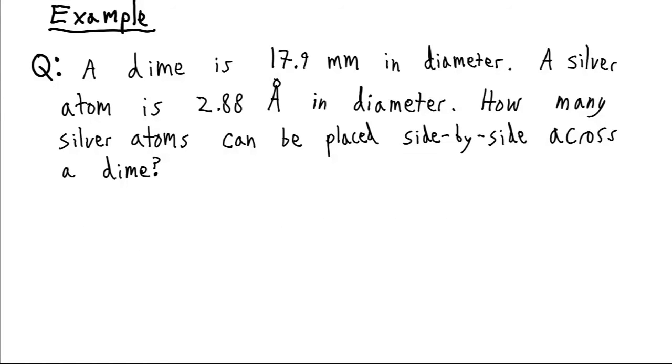Let's say that we have a dime. A dime is about 17.9 millimeters in diameter. You may not know this, but dimes used to be made out of pure silver. Now if we were trying to calculate how many silver atoms spanned the width of the dime, a silver atom is 2.88 angstroms in diameter, and so now how many of those can we place side by side to stretch from one side of the dime to the other?